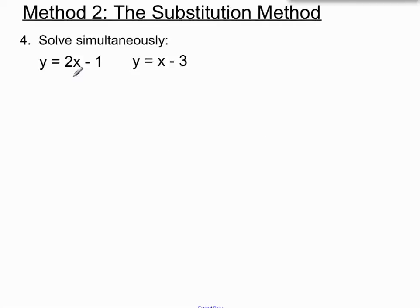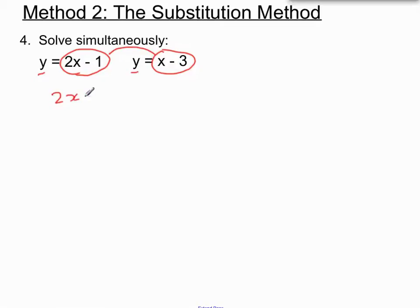You'll notice we've got two equations here and they're both conveniently starting with y equals. So what we say to ourselves: if y equals this, and y also equals this, then mathematically the two expressions should equal each other. So we're going to piece these together in a merged equation — we're going to say 2x minus 1 equals x minus 3. We've just matched them up by substituting x minus 3 in place of y.